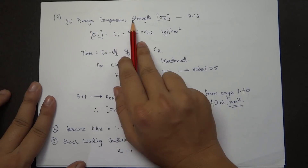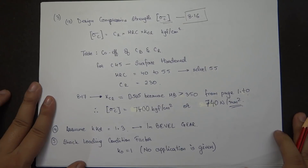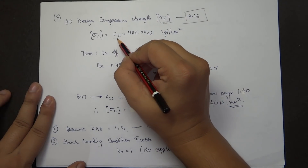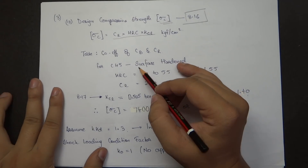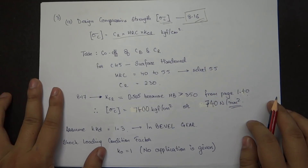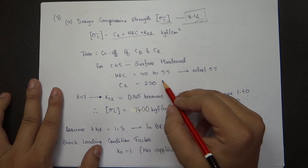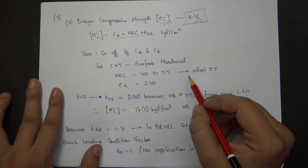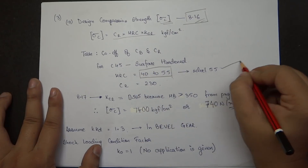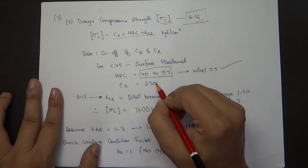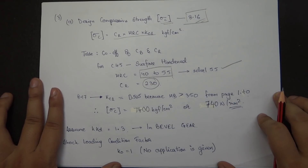The last part of step three is the design compressive stress Sigma_C, from page 8.16. The formula is: Sigma_C = C_R × HRC × K_CL. For C45 surface hardened steel, HRC ranges from 40 to 55; I'll select the maximum value of 55. In the same row, C_R is 230.